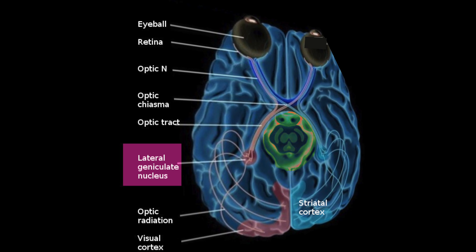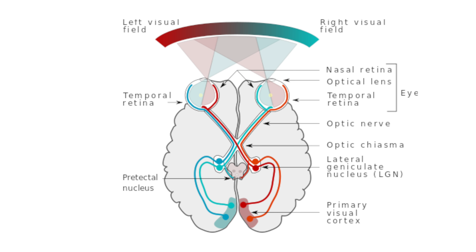Let's start with a quick recap. Remember the retina, that light-sensitive layer at the back of your eye? The axons of the retinal ganglion cells form the optic nerve, which carries visual information from the retina to the brain. These axons reach a crossroads called the optic chiasm. If the axons originate from the temporal side of the retina, they stay on the same side of the brain. But if they come from the nasal side of the retina, they cross over to the opposite side — and they all end up at the lateral geniculate nucleus.